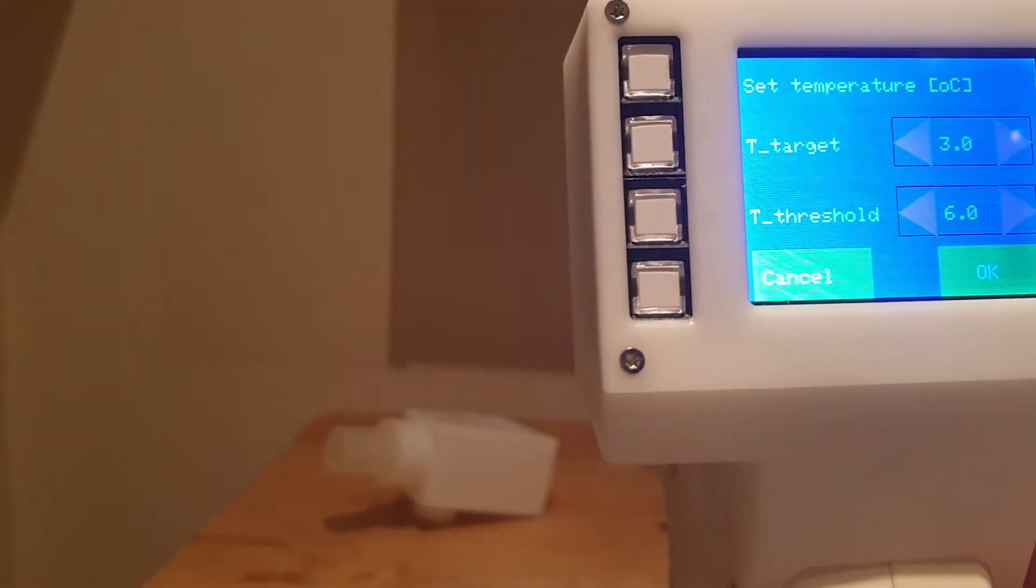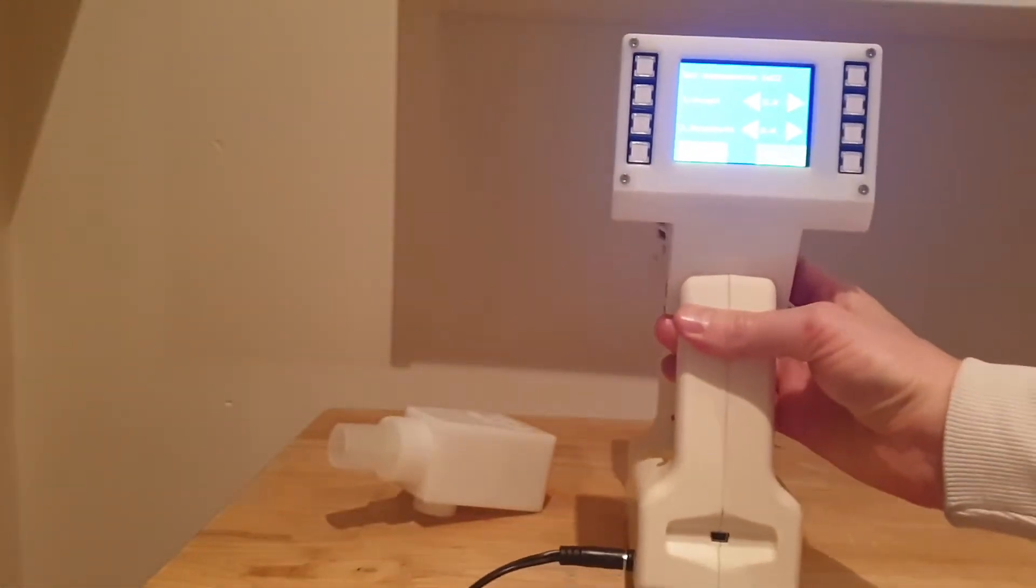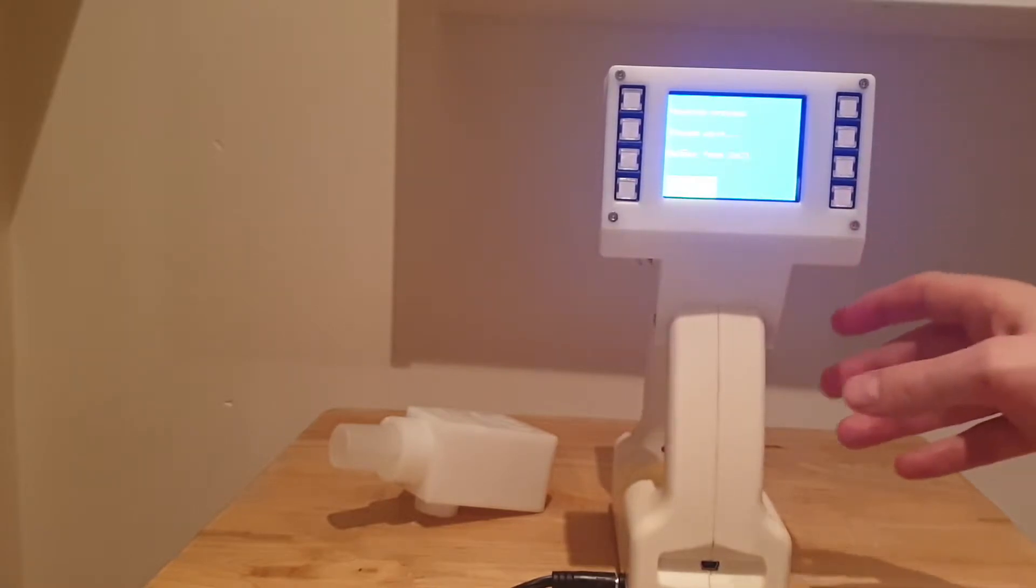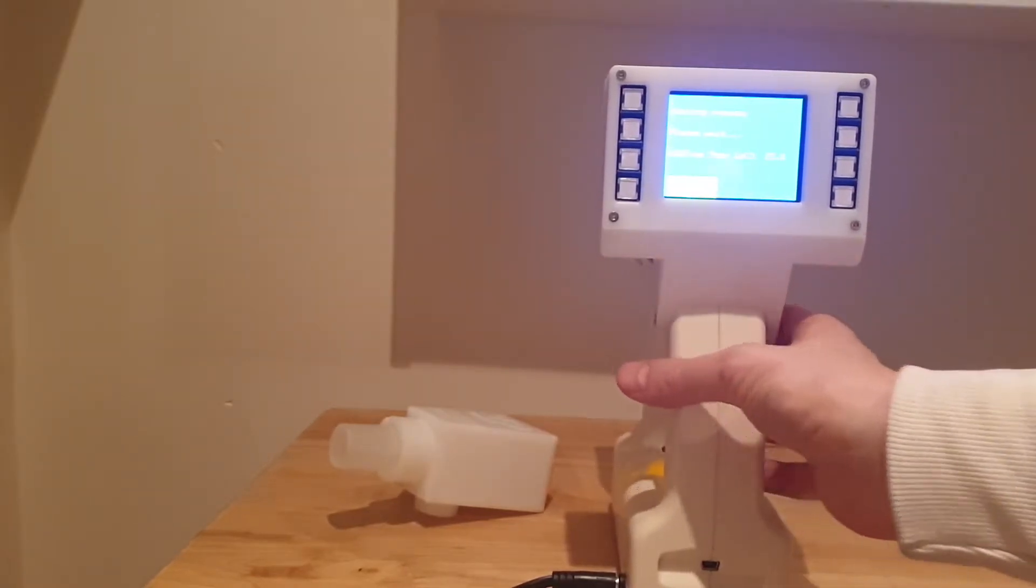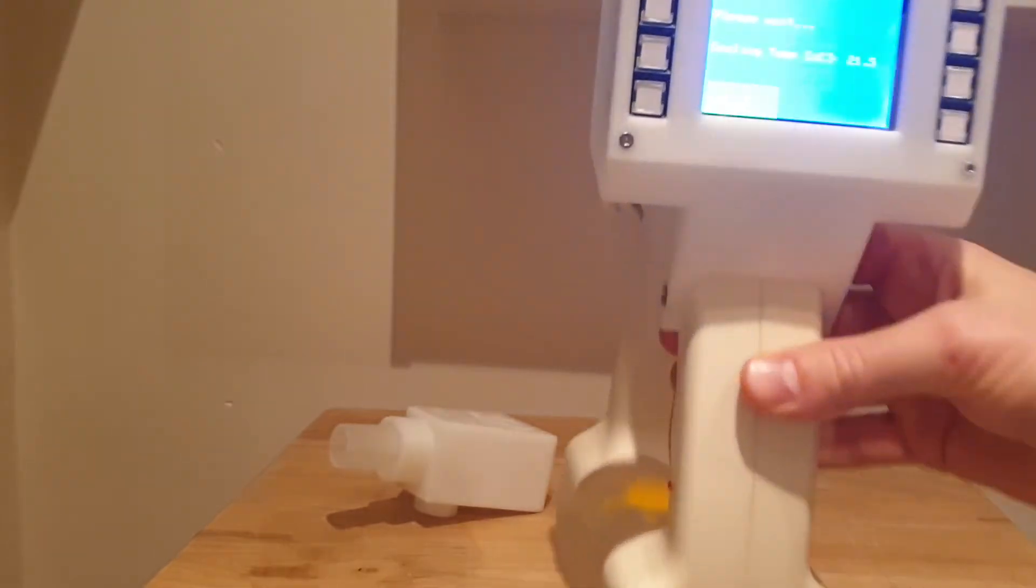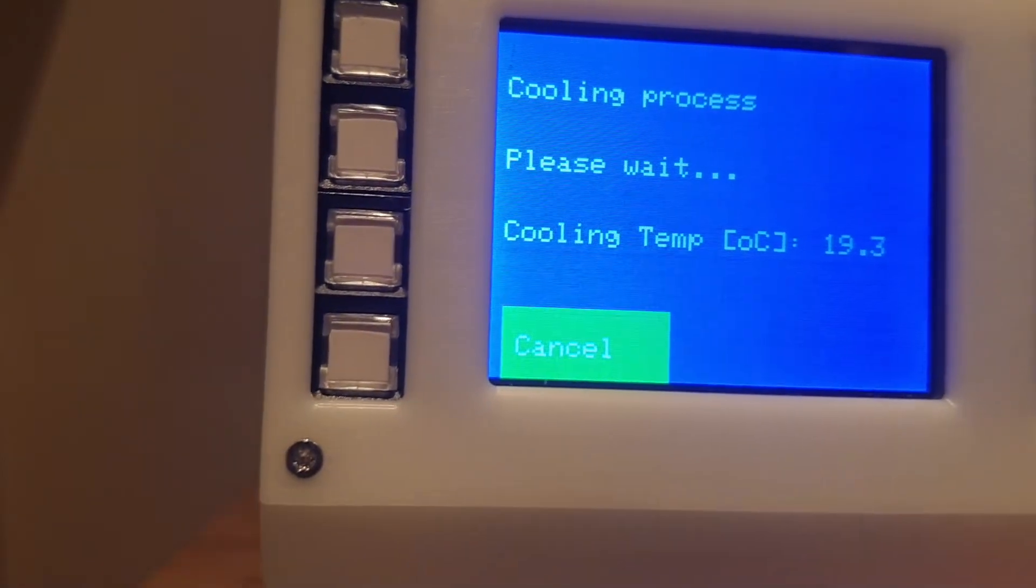So what I'll do is, we effectively have a, if I just spin this round, effectively a Peltier here and we can control the Peltier and condense the atmosphere. So I'm just going to set some parameters on that Peltier, which I've done. And now it's basically cooling it down. So if I just bring this close, it's saying it's at 20 degrees, 19. So it's basically cooling down at the moment.